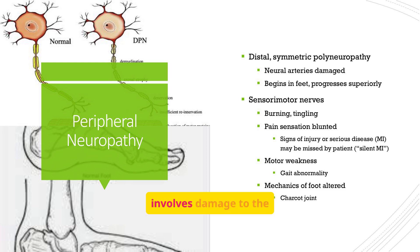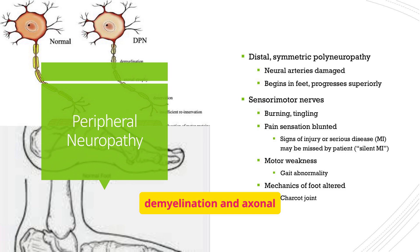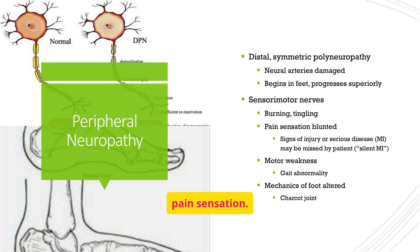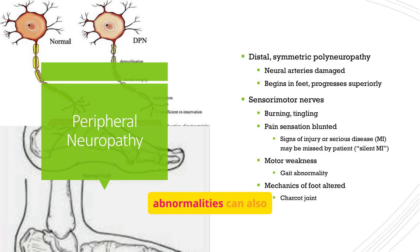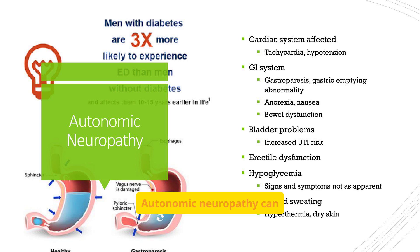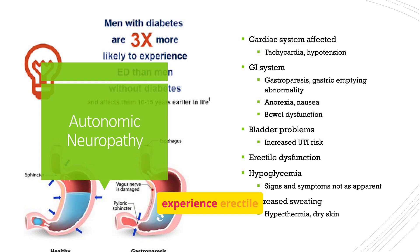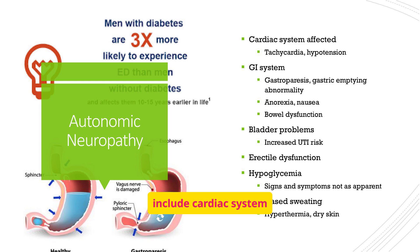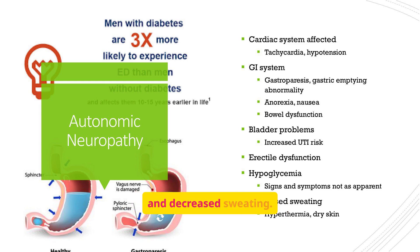Peripheral neuropathy involves damage to the nerves, leading to demyelination and axonal atrophy. Symptoms include burning, tingling, and blunted pain sensation. Motor weakness and gait abnormalities can also occur. Autonomic neuropathy can affect various bodily functions; men with diabetes are more likely to experience erectile dysfunction. Other effects include cardiac system issues, GI problems, bladder problems, and decreased sweating.